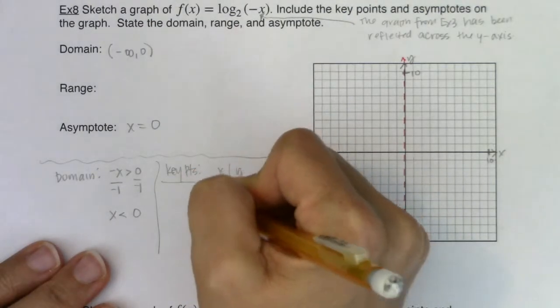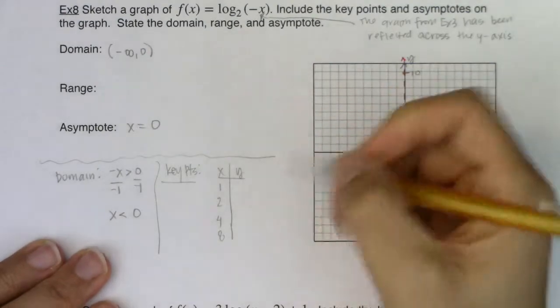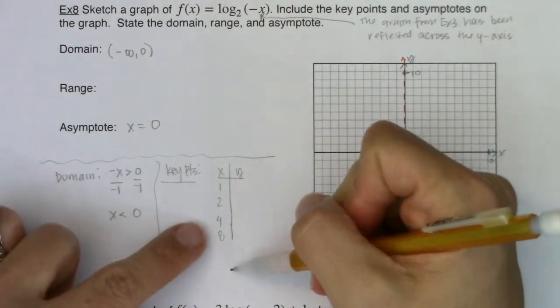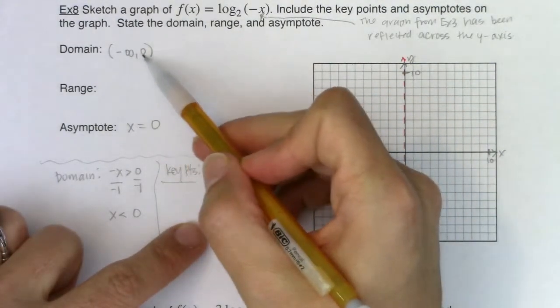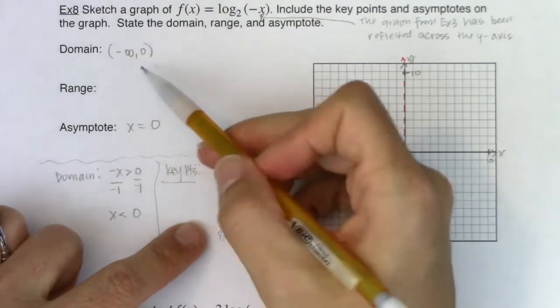And then how we can alter it for this example. So I have been picking one, two, four, and eight. But I want you to take note that these numbers are not in my domain. My domain is from negative infinity to zero. It only includes negative numbers.